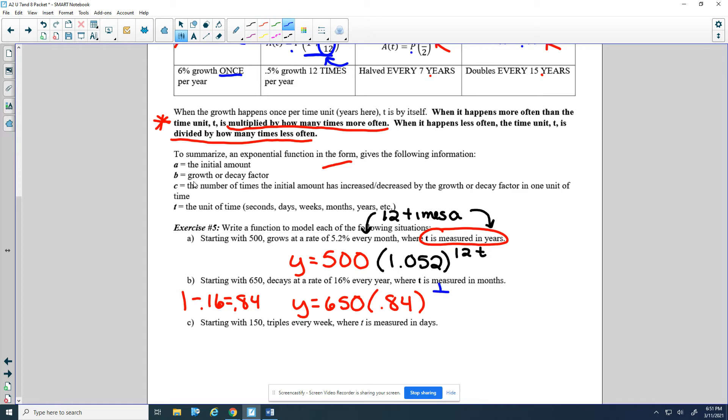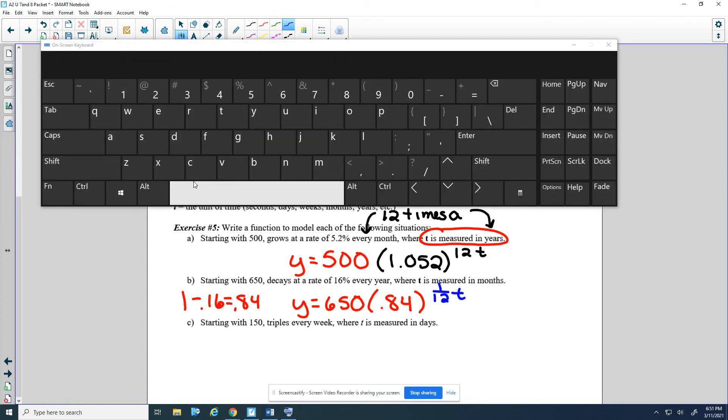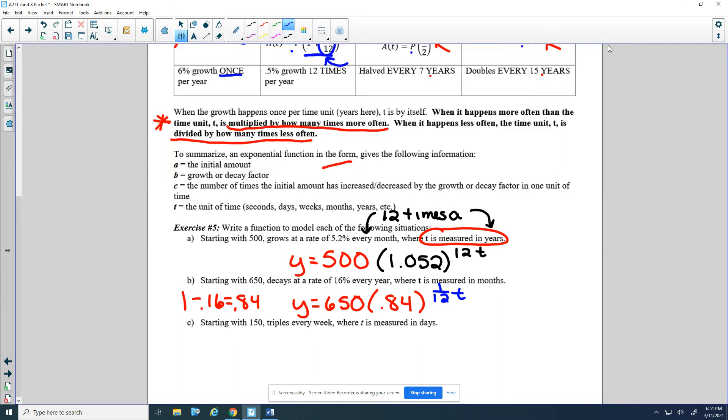So we don't get to do that every t. We have to wait 12 times longer. So it's taking longer than the time unit, so it's 1/12 t. Or we could write that as t over 12. That's an exponent I know. Pretend I wrote that up higher, and this is down low.